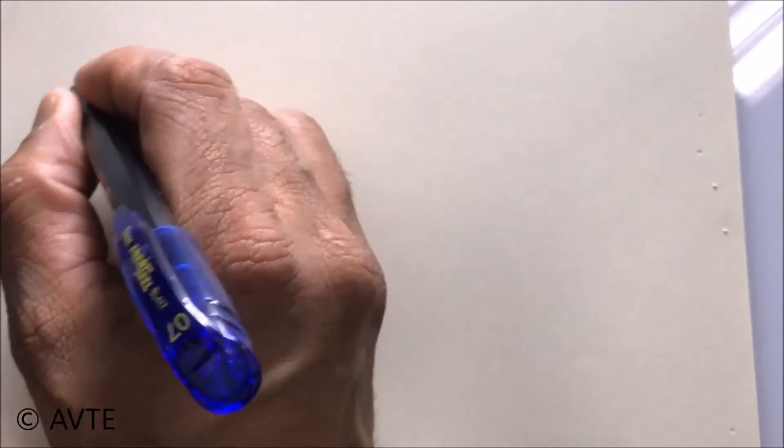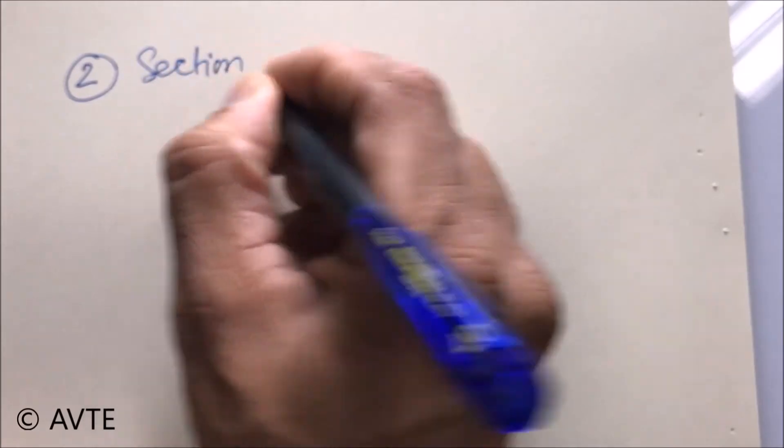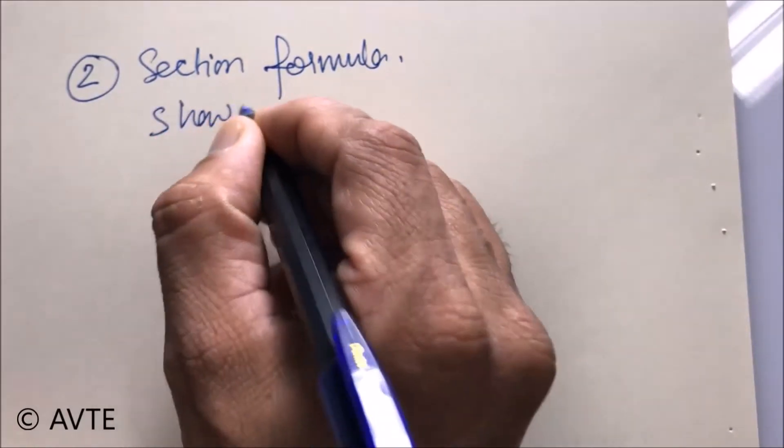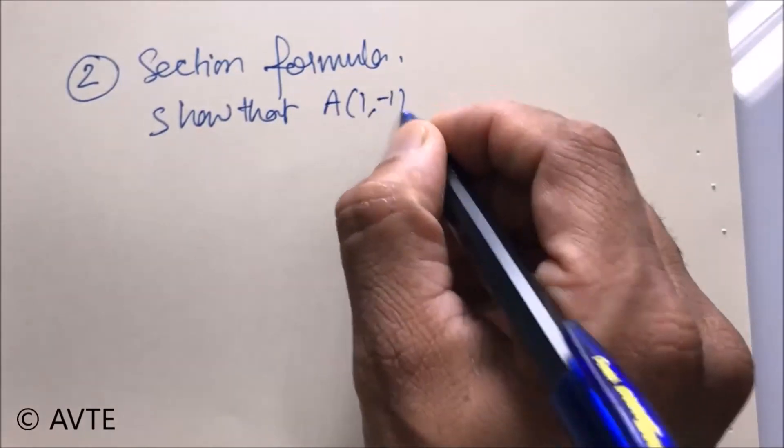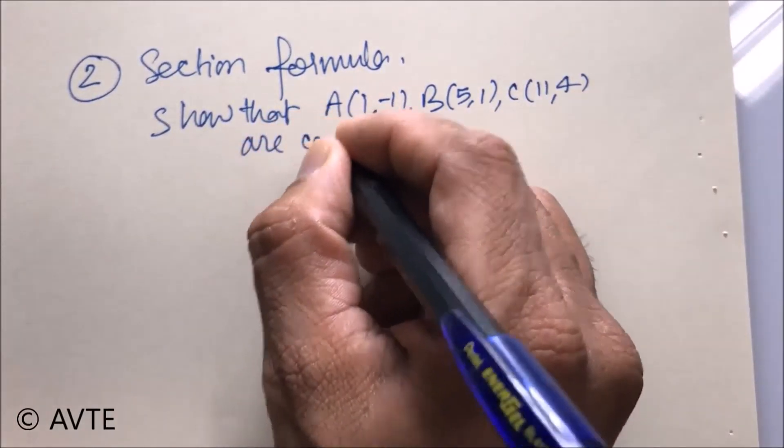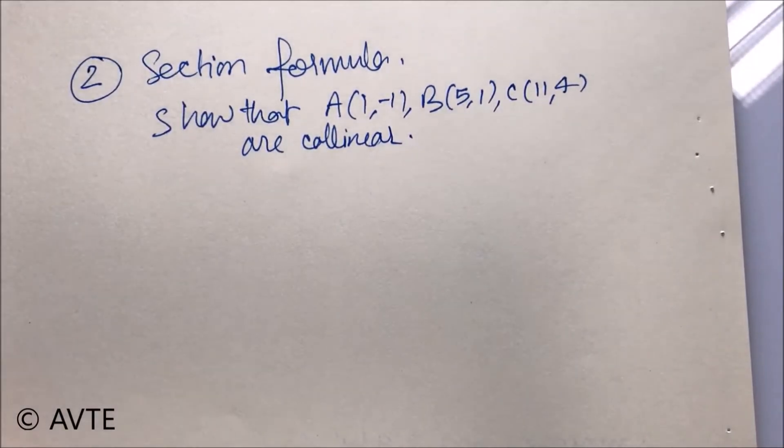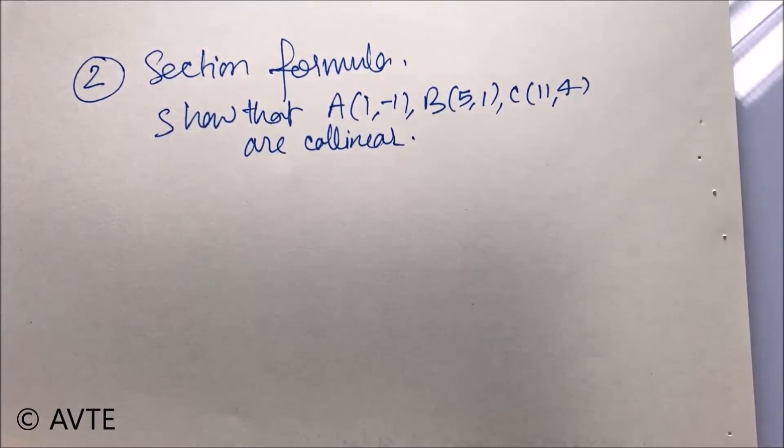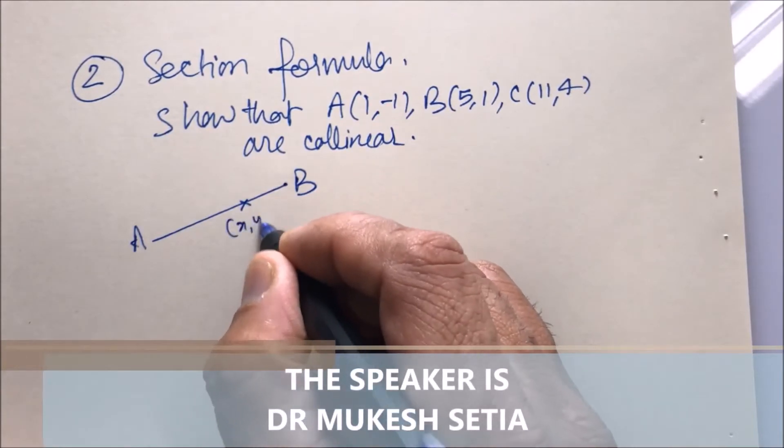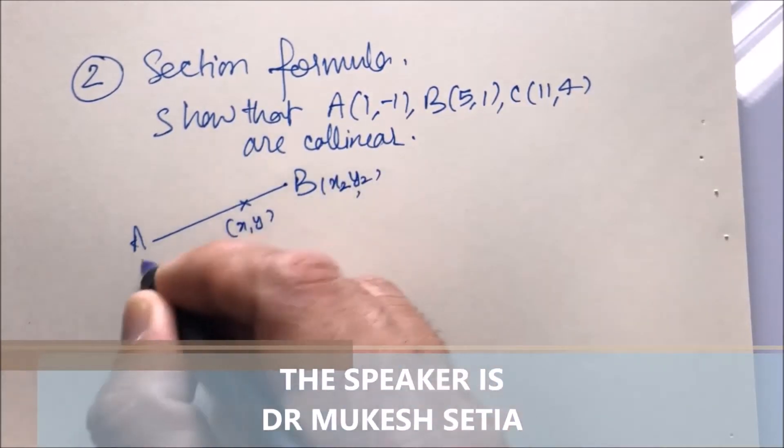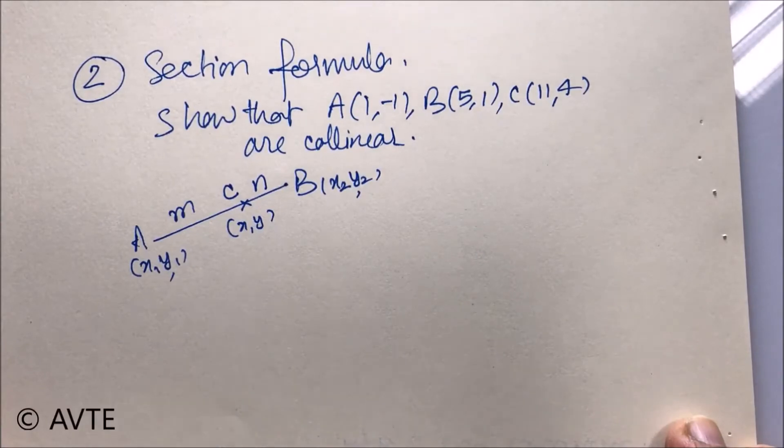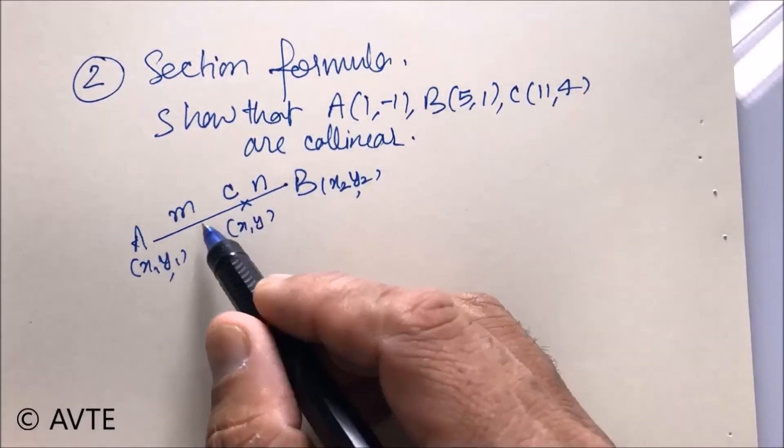Now coming on to the section formula. Here, we are taking the same set. Show that. We all know that section formula is applicable only when the points are collinear. So for the quick review, we are taking internal section formula. And I am taking the ratio, the C dividing AB in the ratio m is to n. So we are taking the ratio as m is to n. So x is and similarly y component is m y2 plus n y1 divided by m plus n.